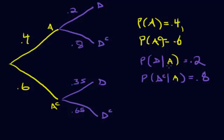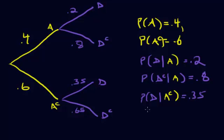So this is how you'd label all of the branches. Down here, this is the probability of D given that you've gone up the A complement branch, and that's going to be 0.35. And then the probability of D complement given you've gone up the A complement branch is 0.65.